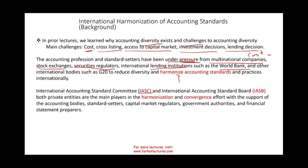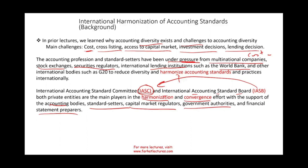In this session we're going to look at the International Accounting Standard Committee, or IASC, which is basically gone. Now we have the IASB — the International Accounting Standard Board — which is a continuation of the IASC. Both are private entities and are the main players in the harmonization and convergence effort, with support from accounting bodies, standard setters, capital market regulators, government authorities, and financial statement preparers.